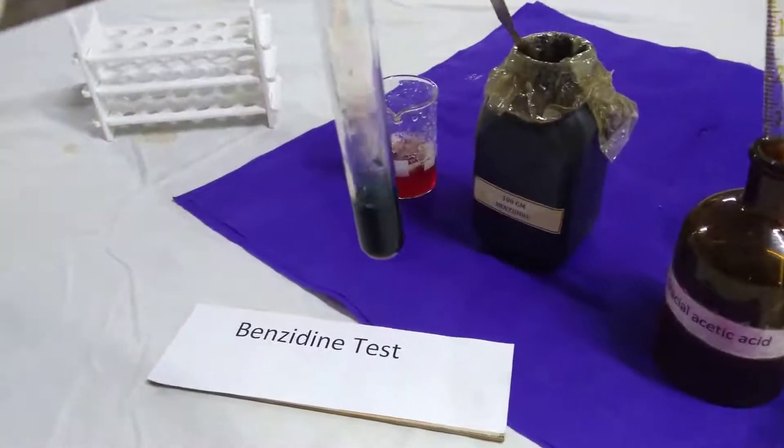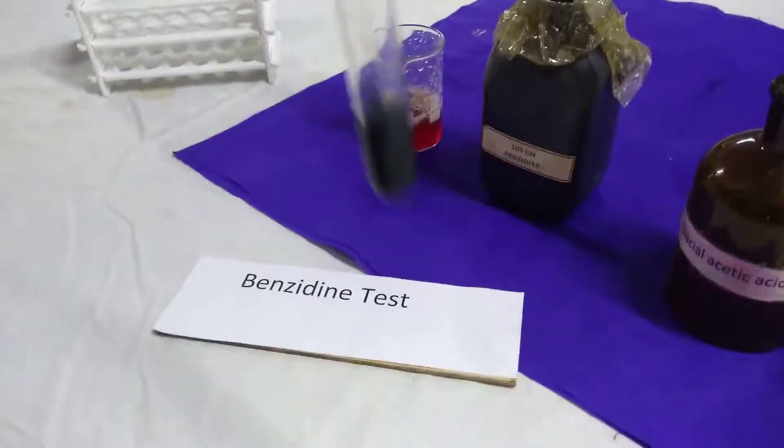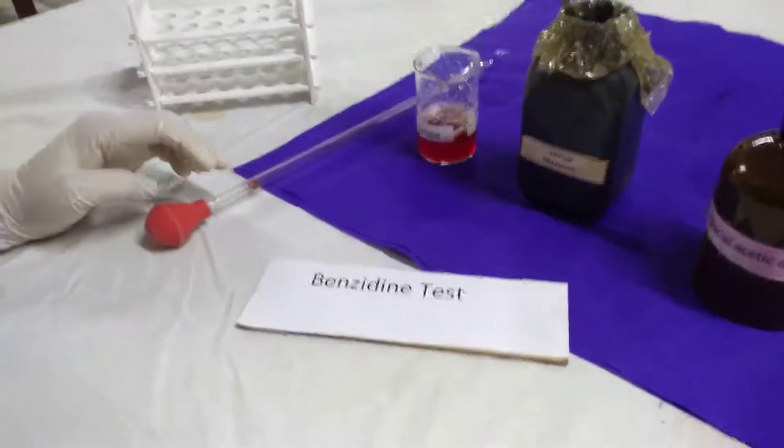Blue or green color develops which turns into brownish black after a few minutes. This indicates the presence of blood in urine.